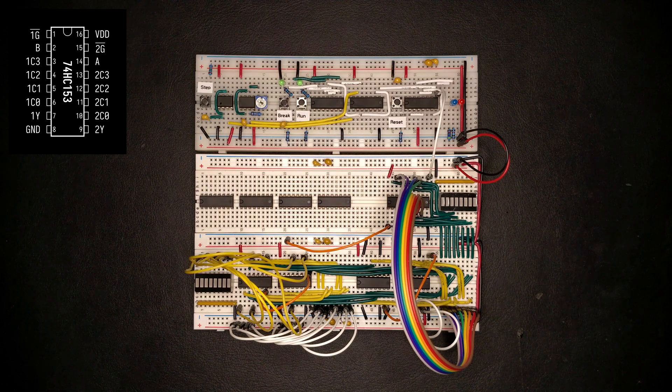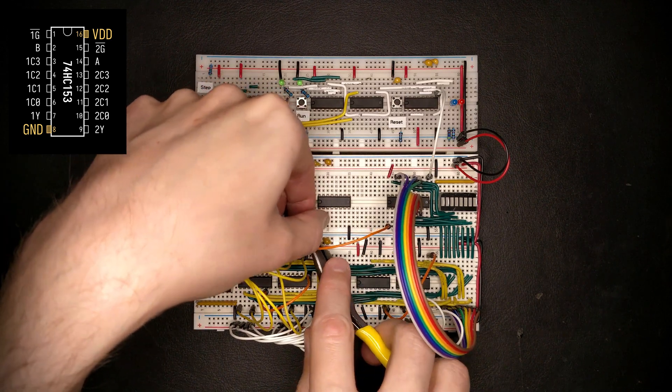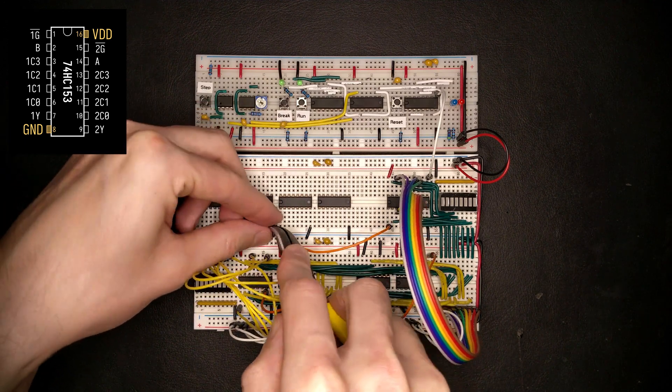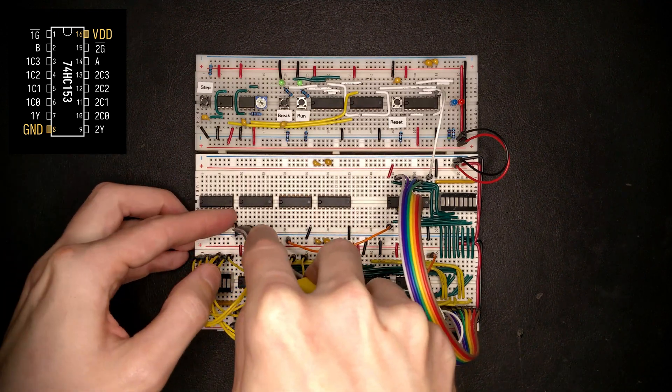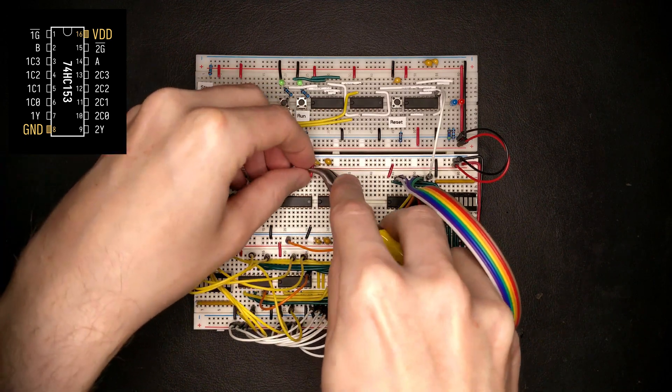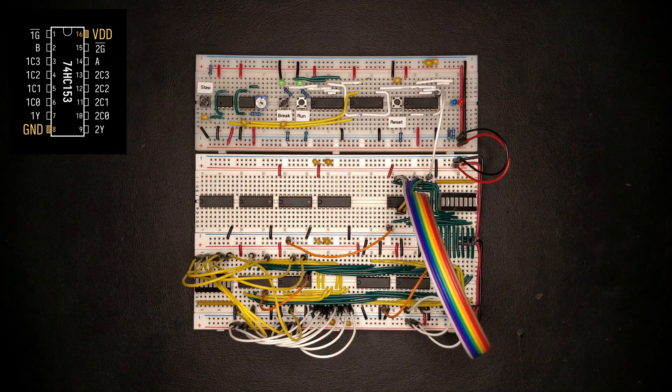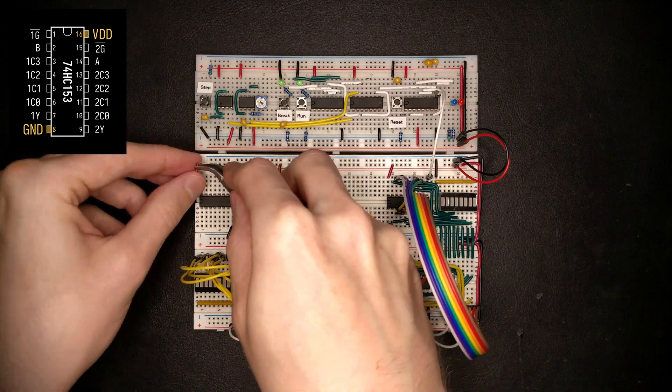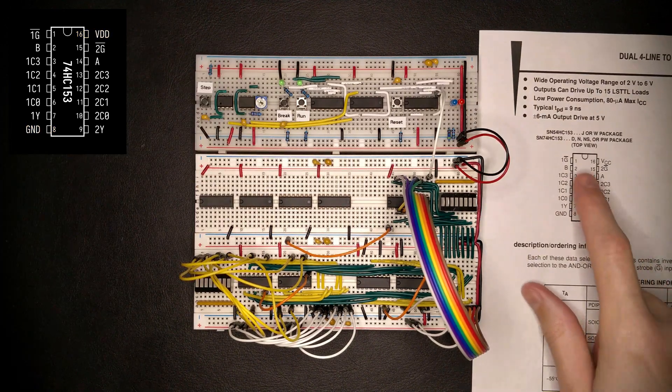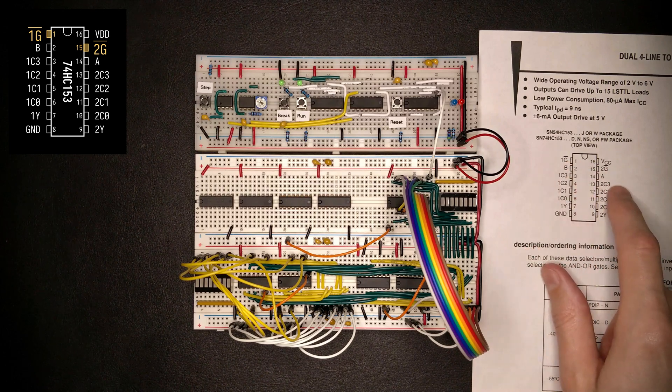Let me hook up power and ground immediately. Now, these multiplexers, they have separate enable inputs, this is the G here, which we want to connect together, because we want to have both multiplexers enabled at the same time.